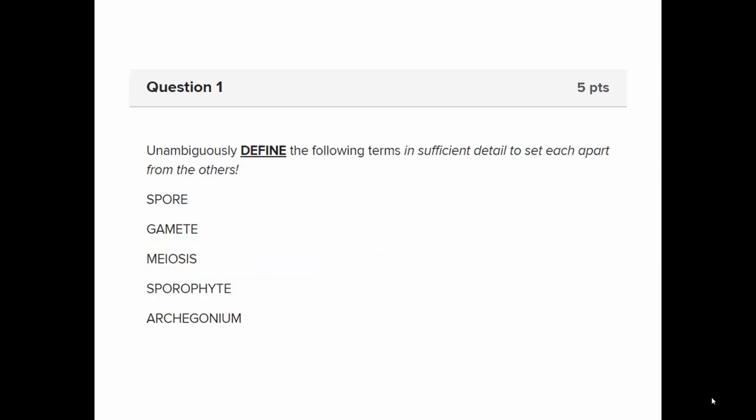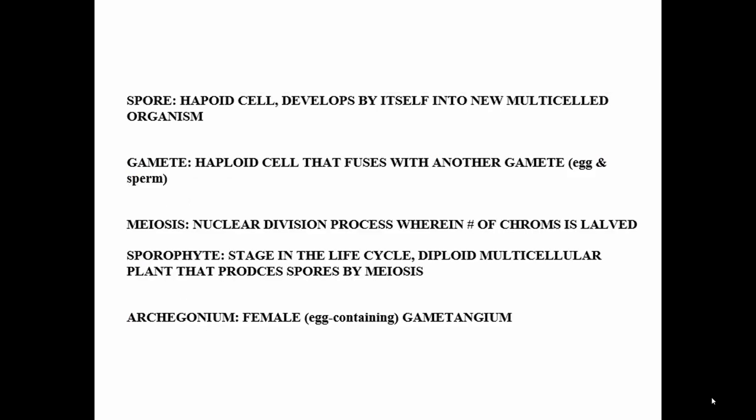Plant life cycles have these different components, of which a few of them are spores. A spore is a single cell, which is kind of a loner — it develops all by itself into a new multicellular organism. Gametes are also haploid single cells, but they fuse with other gametes to perpetuate the life cycle.